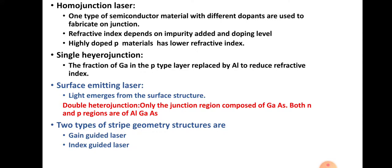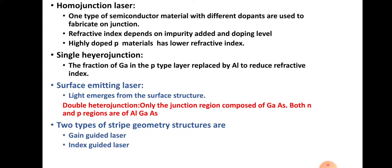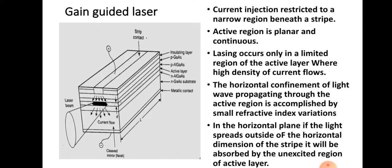Usually in most modern semiconductor lasers the current is injected only within a narrow region beneath a striped contact, and such type of geometry is called stripe geometry. The stripe geometry structure is classified into two types: gain guided laser and index guided laser. In the case of surface emitters, the light emission is from the surface of the structure, but for practical purposes we confine the light emissions to some portion of the surfaces, and that is implemented using the stripe geometry structure.